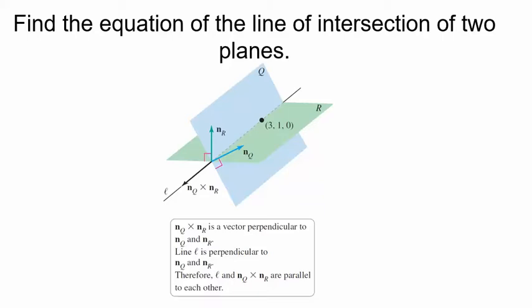In this video, we're going to look at finding the line that is the intersection of two planes. So we're going to find the equation of this line in 3D. I want to motivate how we're going to do that by looking at this picture here. We have two planes: a green plane and a light blue plane. In this picture, we have a point 3, 1, 0, which lies on both planes.